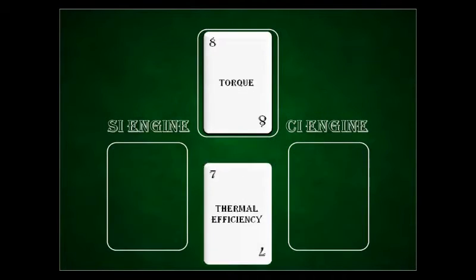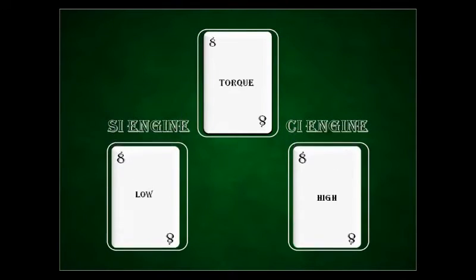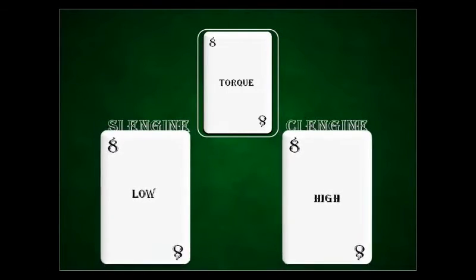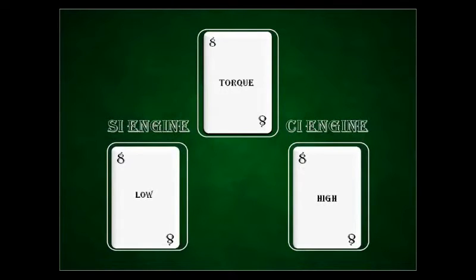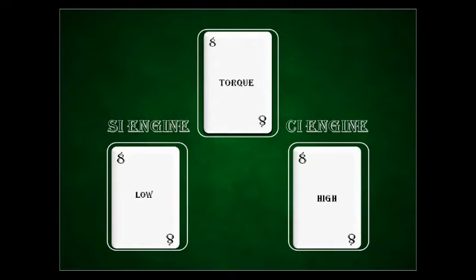Next is torque. The torque generated by CI engines is very high compared to SI engines. This is because CI engines work at a high compression ratio, so the piston travels a far greater distance into the cylinder and the radius of the crank also increases. Since torque is the cross product of force and radius, this increase in radius causes an increase in torque. This is why almost all trucks and heavy vehicles use CI engines, while passenger vehicles and bikes use SI engines.